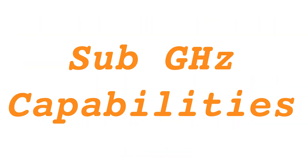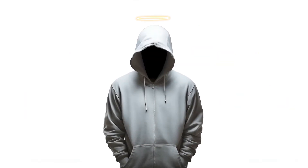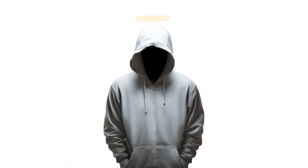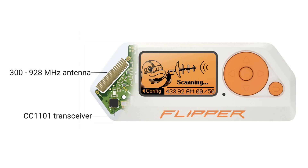Be ethical! Sub-Gigahertz capabilities. The Flipper Zero is equipped with a built-in module that enables it to receive and transmit radio frequencies within the 300 to 928 MHz range.